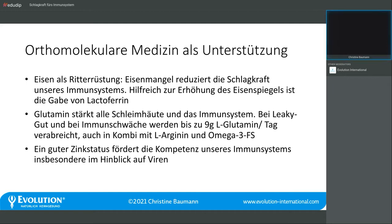Aus der orthomolekularen Medizin: Eisen gehört für unser Abwehrsystem ganz wichtig dazu – das ist unsere Ritterrüstung. Bei Eisenmangel reduziert sich die Schlagkraft des Immunsystems. Wenn wir den Eisenspiegel anheben wollen, gibt es Bremsen in der Aufnahme: Bei hochdosierter Eiseneinnahme schüttet der Darm Hepzidin aus, das für 24 Stunden die Eisenaufnahme bremst. Wenn wir jeden Tag Eisen einnehmen, reduzieren wir die Aufnahmefähigkeit. Das können wir vermindern, indem wir Lactoferrin zur Eiseneinnahme zugeben – Lactoferrin bremst die Hepzidin-Ausschüttung und das Eisen wird deutlich besser verwertet.